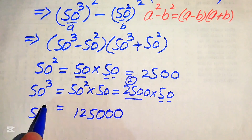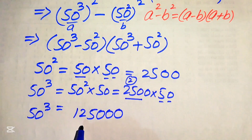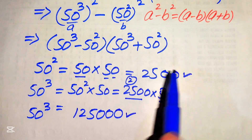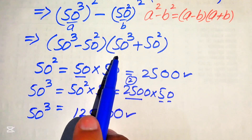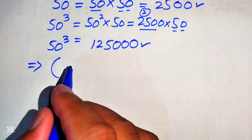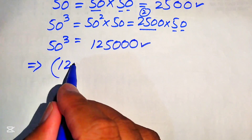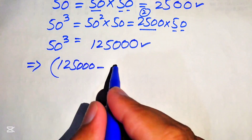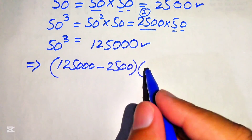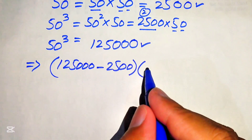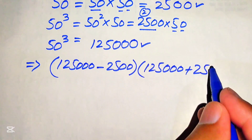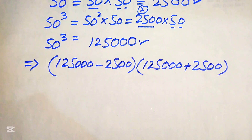So 50 cubed equals 125,000. We put these two values into the expression. The first factor becomes 125,000 minus 2,500 and the second factor is 125,000 plus 2,500.